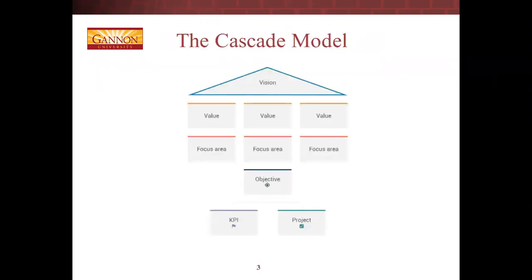This is the cascade model, and I like this model because it's fairly simplistic. There are a lot of different types of strategic planning models — most of them follow this kind of flow — and some of them will use different terminology, such as objectives or goals. We're going to follow this model through the course and you will use it in building your strategic plan, which is part of your final assignment.